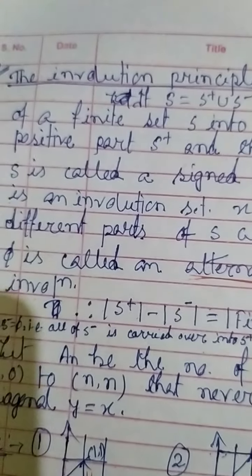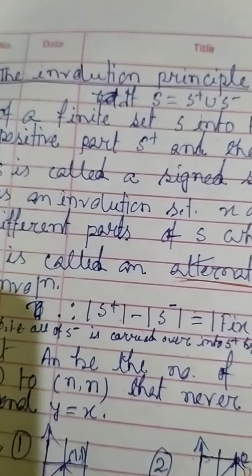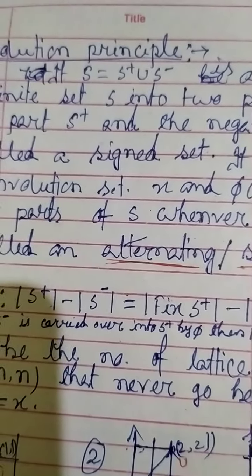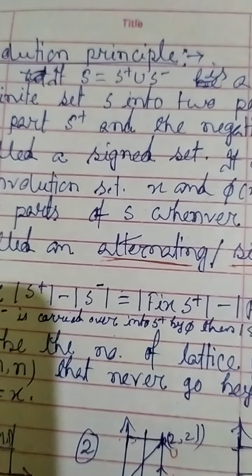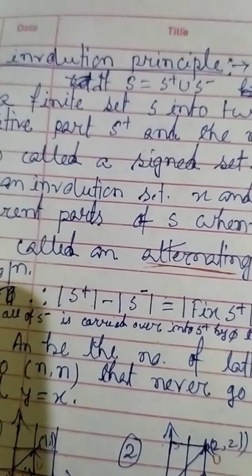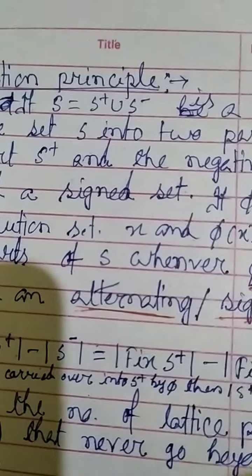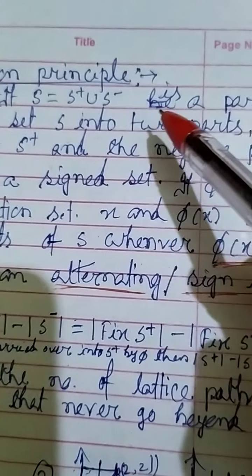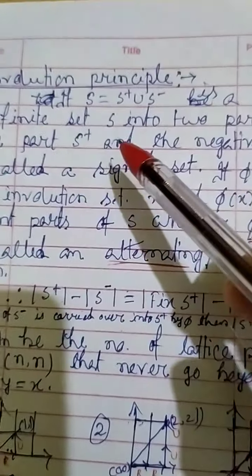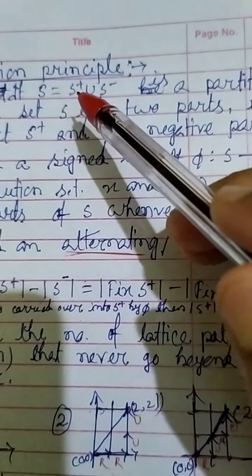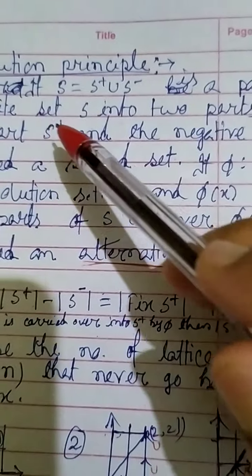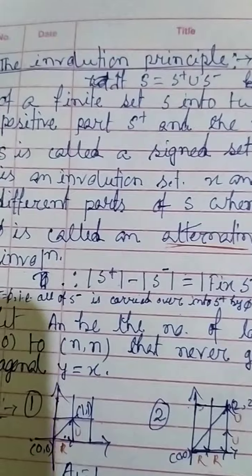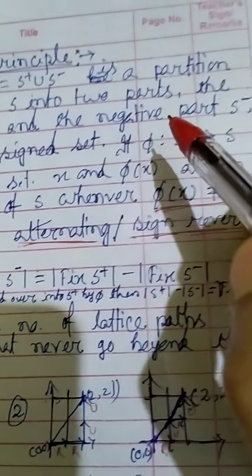In this video we will discuss the concept of the Involution Principle. Before going to this concept, we need some terminology. We have the concept that S equals S-positive union S-negative, which is a partition of a finite set into two parts — the first part is called the positive part and the second part is called the negative part.